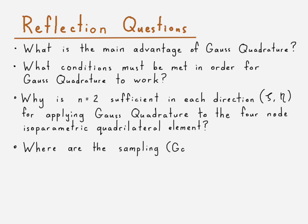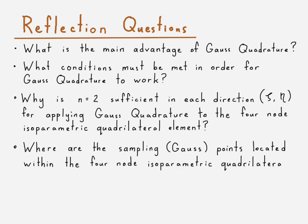Where are the sampling points, the Gauss points, the Gauss integration points? Where are those located within the four-node isoparametric quadrilateral element? And this should conclude part three of our video series on isoparametric quadrilateral elements, focusing on using Gauss quadrature to integrate the stiffness matrix.